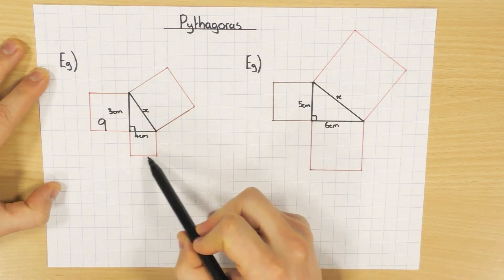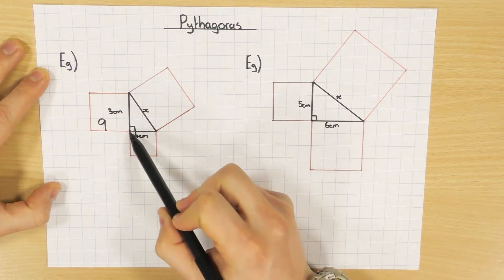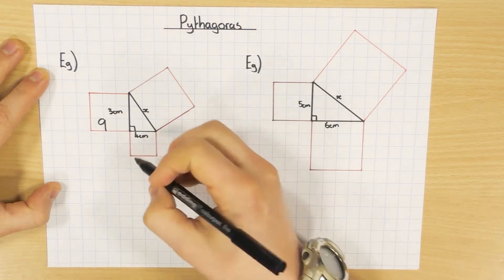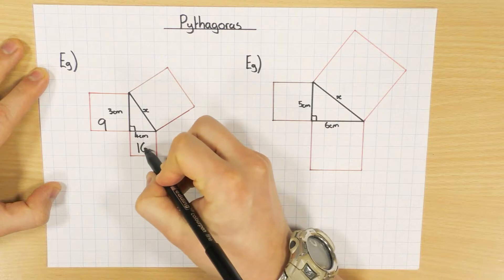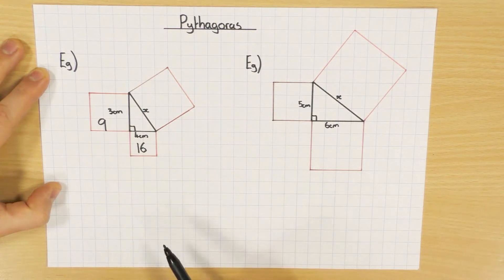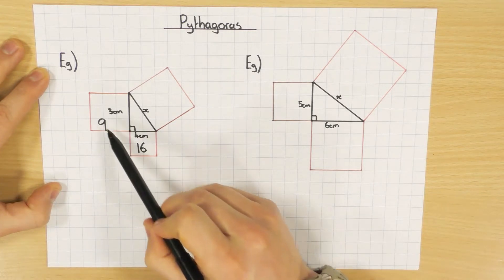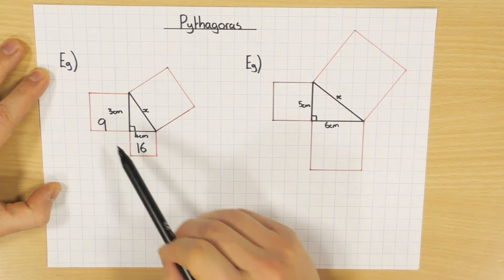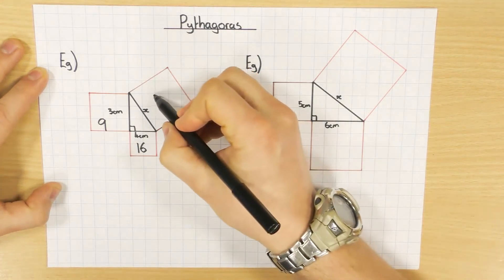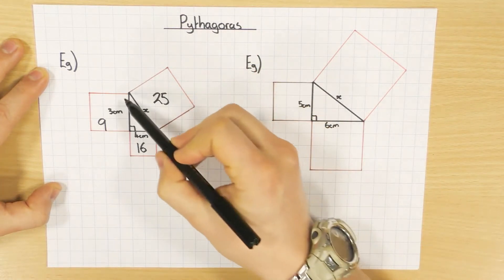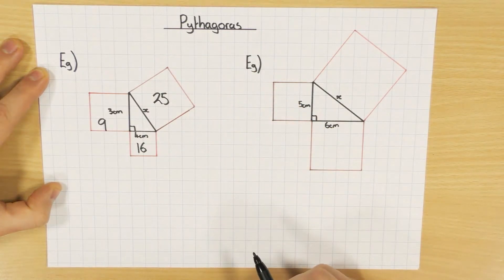If I work out the area of this smaller square here — well, if that length is 4, then 4 times 4 is 16. So the area of this one is 9, the area of this one is 16, and Pythagoras tells us that if I add these two together I'll get the area of the bigger square. So 9 plus 16 is 25, so the area of the bigger square is 25.